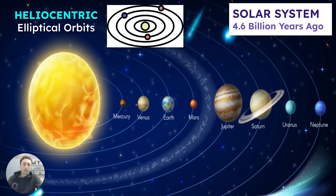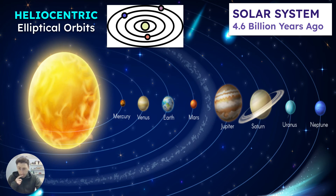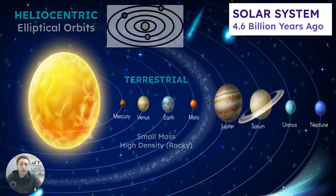That is as opposed to the geocentric model, which was the idea that the Earth was at the center. But really the sun is at the center, so it's called heliocentric. The planets orbit around the sun not in a circle but in an elliptical orbit, which means it's slightly oval — called an elliptical orbit.